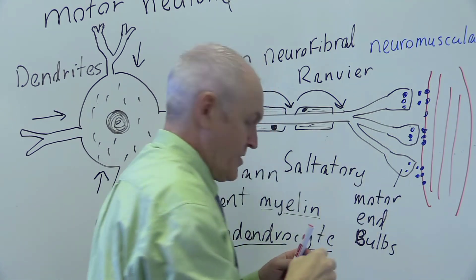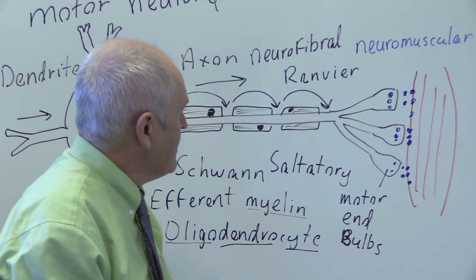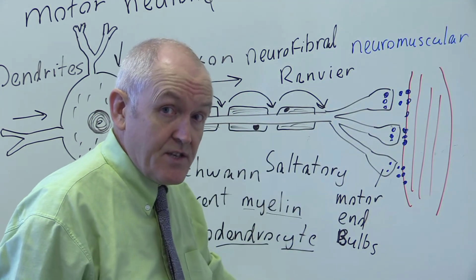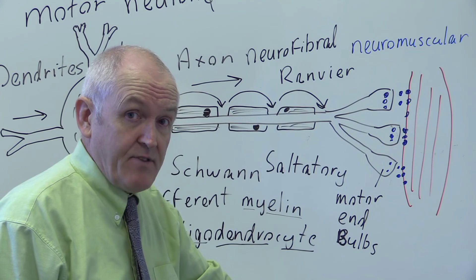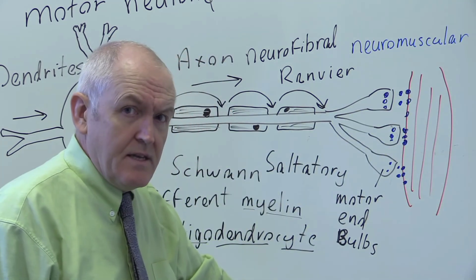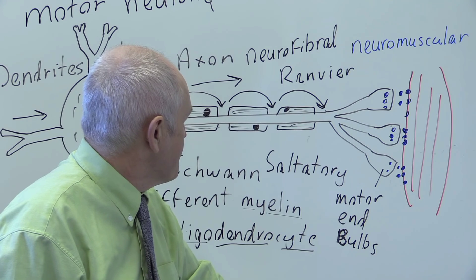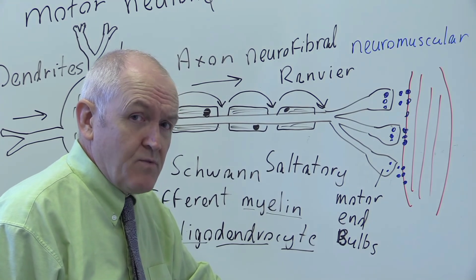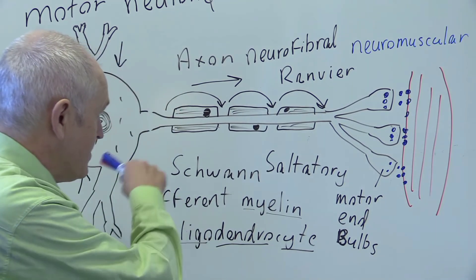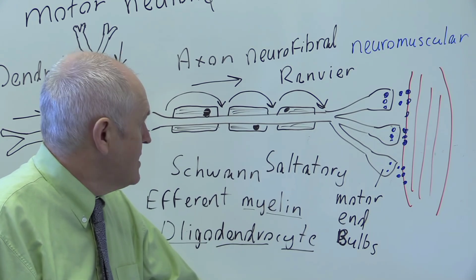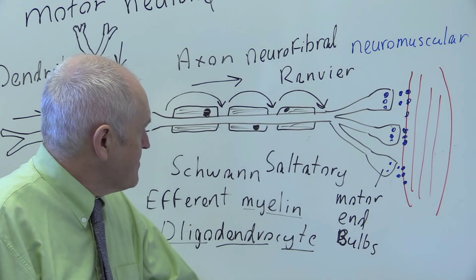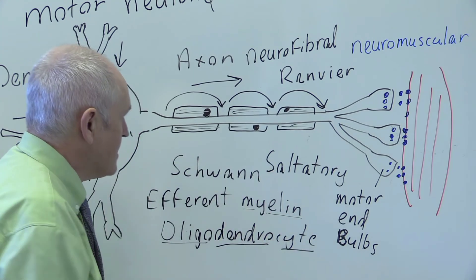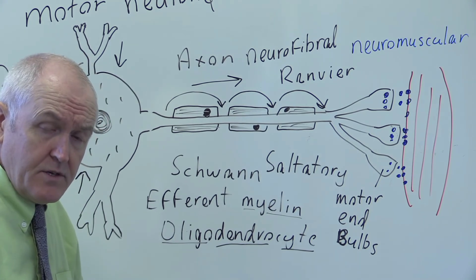We could also mention myasthenia gravis, which is a disease of these neuromuscular junctions — the whole junction between the nerves and the muscle. This is the area also affected by muscle-relaxing drugs used in intensive care and anesthesia to cause paralysis of skeletal muscle in our patients. Or we could think about spinal cord injuries where these neurons can be transected in the spinal cord, leading to permanent paralysis. So there are lots of clinical applications based on this essential anatomy and physiology of the motor neuron.